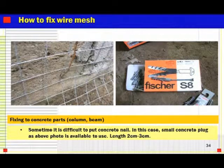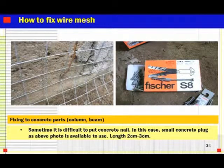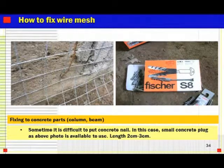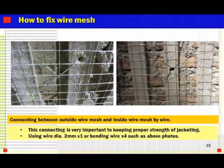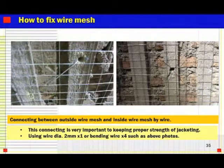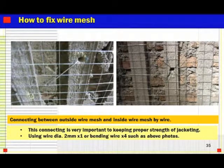For fixing the wire mesh to the concrete part — column and beam — sometimes it is difficult to put concrete nails, so a small concrete plug of about 2cm or 3cm length can be used. Connecting outside wire mesh and inside wire mesh by wire is very important to keep the proper strength of the jacket.